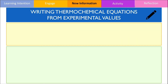To write a thermochemical equation, the first thing we should always do is write down the balanced chemical equation for the combustion of fuel. Typically, most questions ask you to write the complete combustion equation. However, you should also be able to write down the equation for the incomplete combustion of fuel if you were ever asked as well.